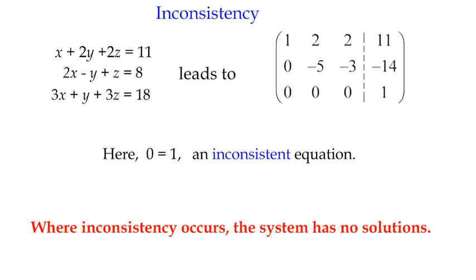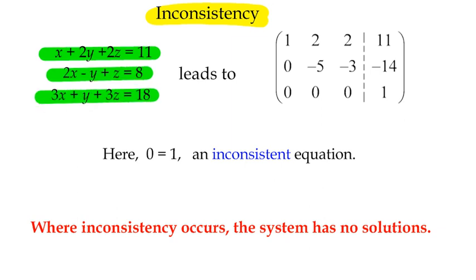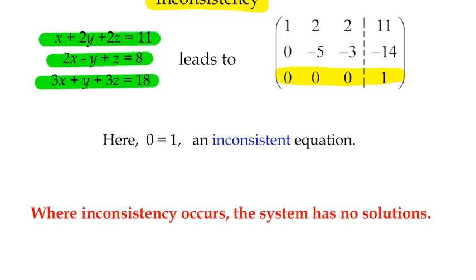Now, the second possibility is we've got something called inconsistency, and inconsistent usually means that it's not going with the pattern, something's kind of gone wrong with it. Here's a set of equations. We've got a 3 by 3 system, and this time when we actually do our elementary row operations, we end up with this kind of weird thing happening where we've got zeros in our coefficient matrix, and we've got a 1, a constant, but it doesn't have to be a 1, it could be any number in the constant matrix.